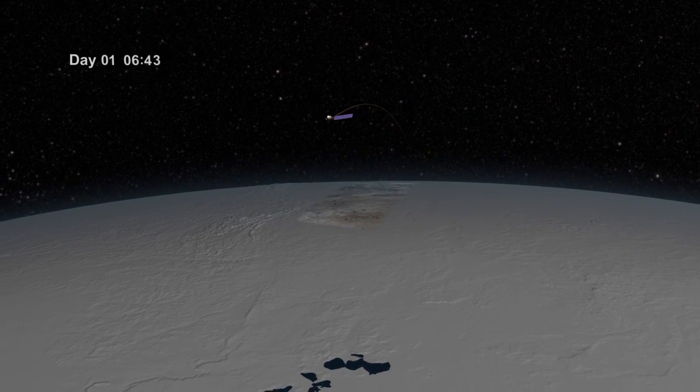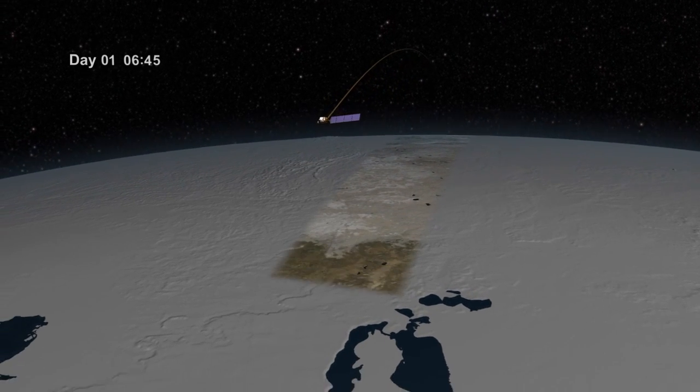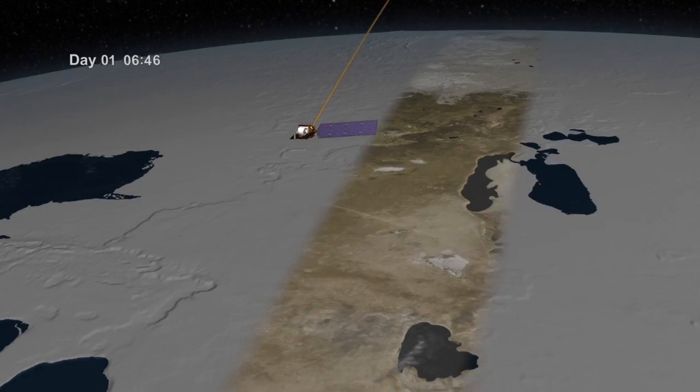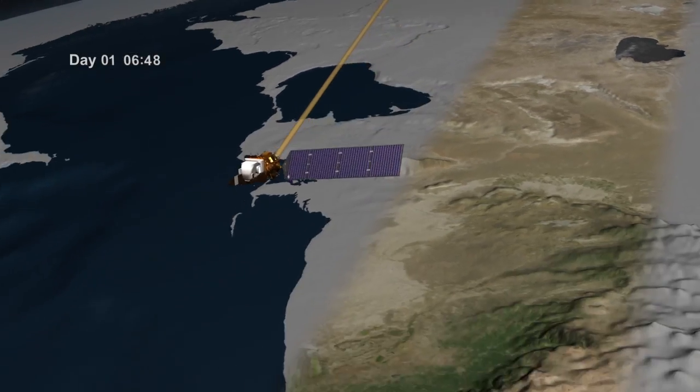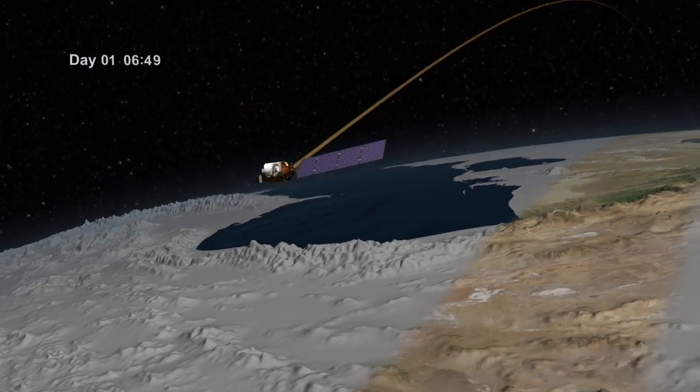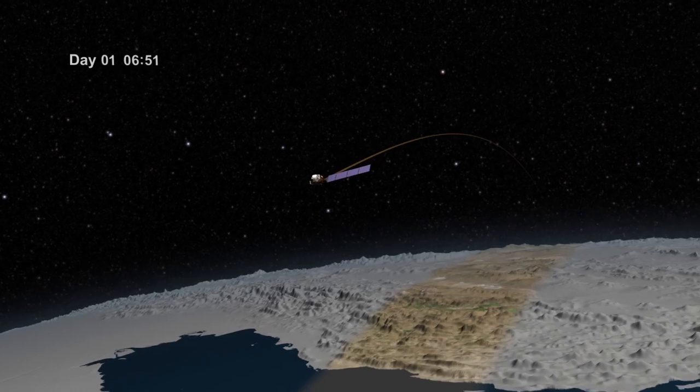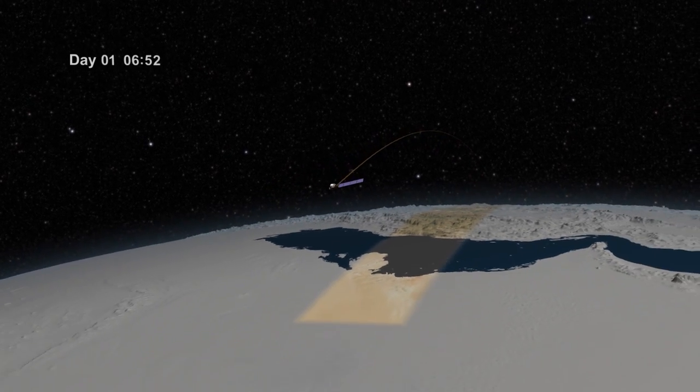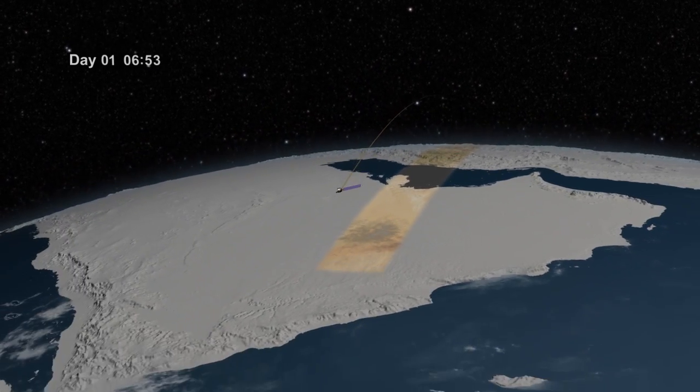As a Landsat satellite flies over the surface of the Earth, the instruments aboard the satellite are able to view a swath 185 kilometers wide and collect images along that swath as the satellite proceeds through its orbit.